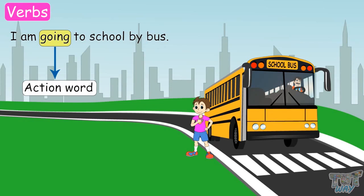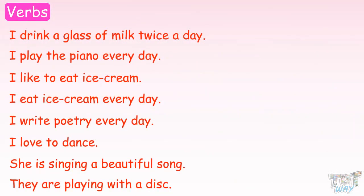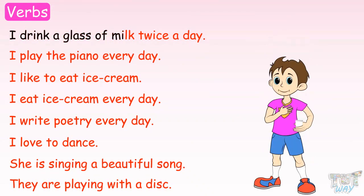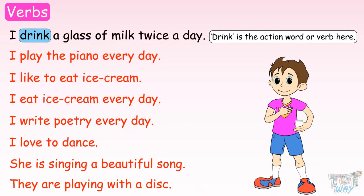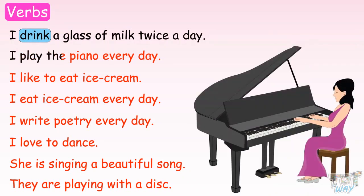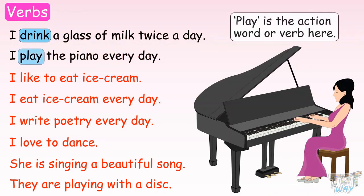So kids, verbs are the action words in the sentence. Here are some sentences. Let's read them and circle the verbs in them. I drink a glass of milk twice a day — drink is the action word or verb here. I play the piano every day — play is the action word or verb here.